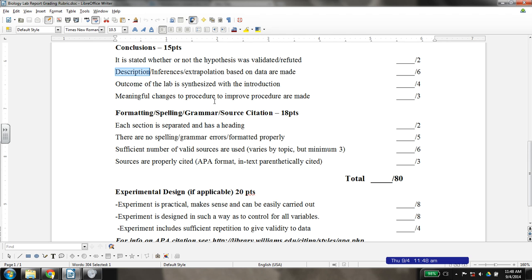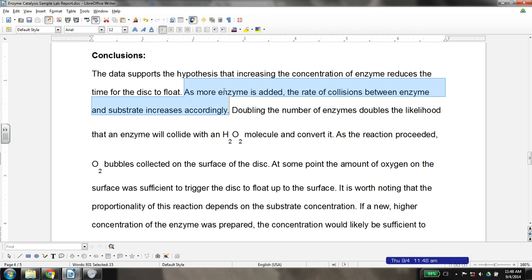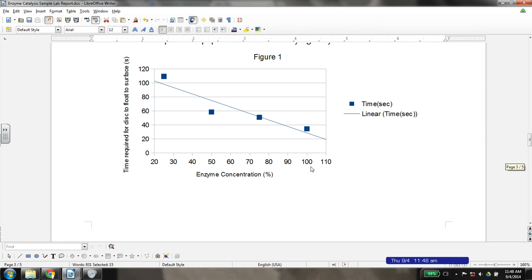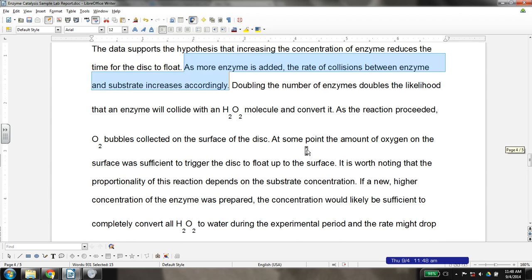And we already talked about description, our extrapolation section is going to go from the data to what would happen beyond the data we collected. For example, in our graph, we went out to 100% down to 25%. We could talk about if more potent concentrations of enzyme were made, what might happen. And so here we have a statement. Doubling the number of enzymes doubles the likelihood that it will collide. This is still more inference,